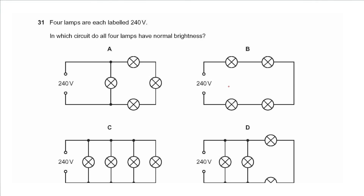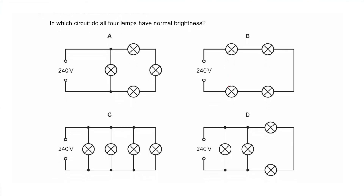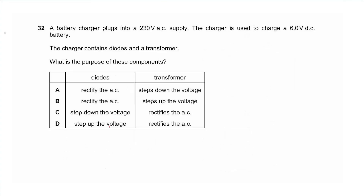Question 31 says four lamps are each labeled 240 volts. In which circuit do all four lamps have normal brightness? They all must have 240 volts across them, which means with a 240-volt supply all lamps must be connected in parallel. We choose C, where all lamps are connected in parallel.